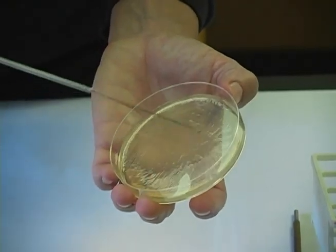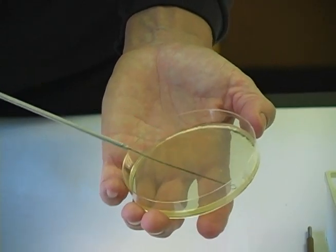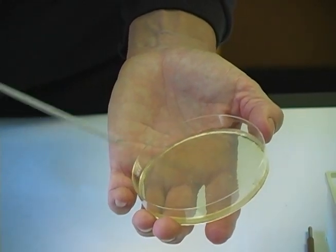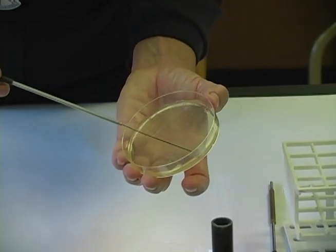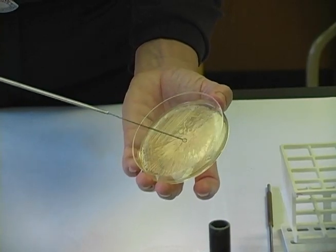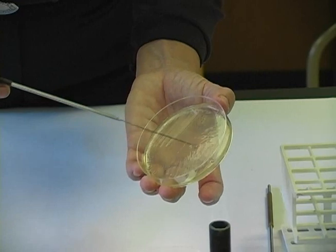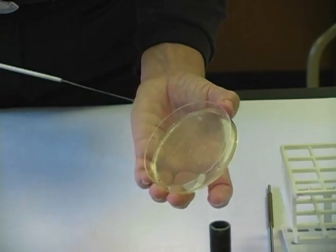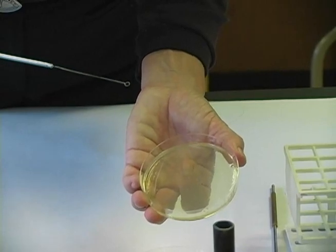Cooling my loop, transferring some of the microbes from quadrant two to quadrant three, streaking them or spreading them over the surface of quadrant three. Cooling my loop, transferring some microbes from quadrant three to quadrant four and then using large lightning bolt type streaks spread those bacteria over the surface of quadrant four.